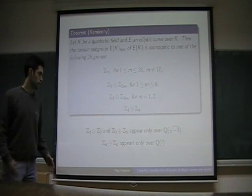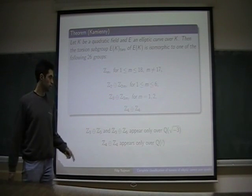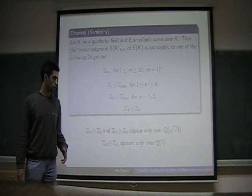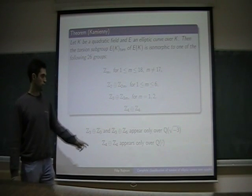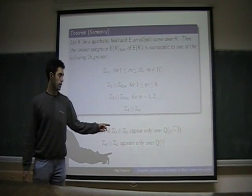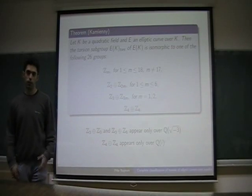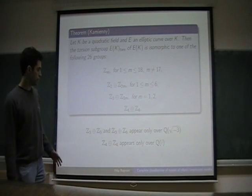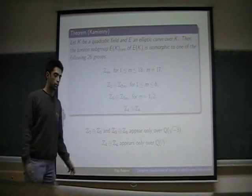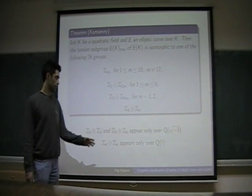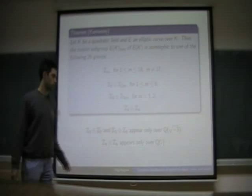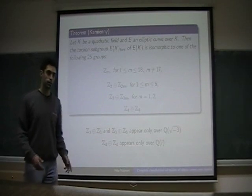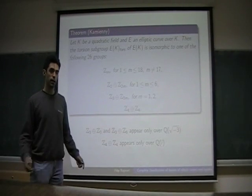In this paper, we study possible torsion subgroups of elliptic curves over these two fields: over Q(√-3) and Q(i). These two fields are special in a certain way, as they are the only two quadratic cyclotomic fields, and these torsion groups appear over these fields but do not appear over any other field.